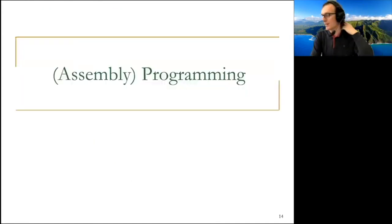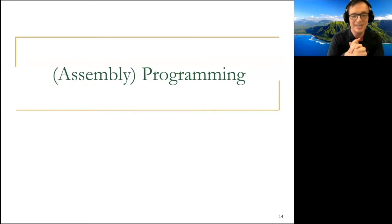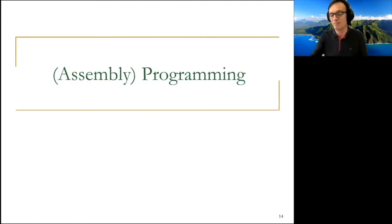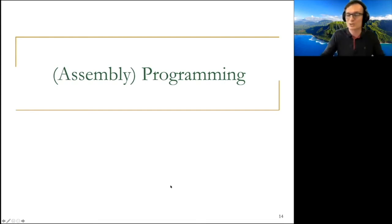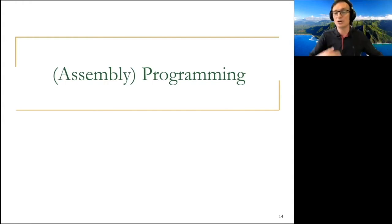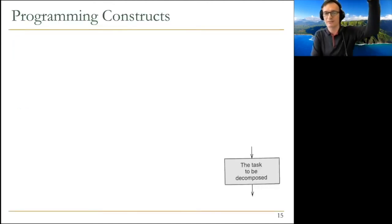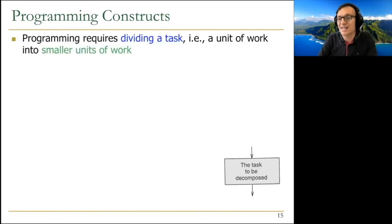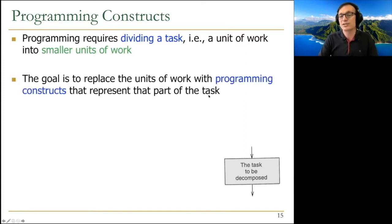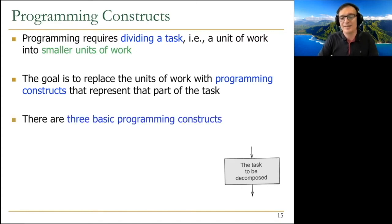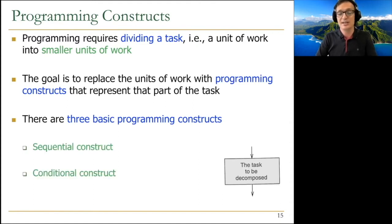Now let's raise the abstraction level and talk about programming. We know exactly how instructions execute, how to build programs that run on a real machine, and how the machine is built from combinational logic. Nothing should be magic at this point — from transistors all the way to assembly programming. Programming requires dividing a task into smaller units of work — divide and conquer. There are three basic programming constructs: sequential, conditional, and iterative.